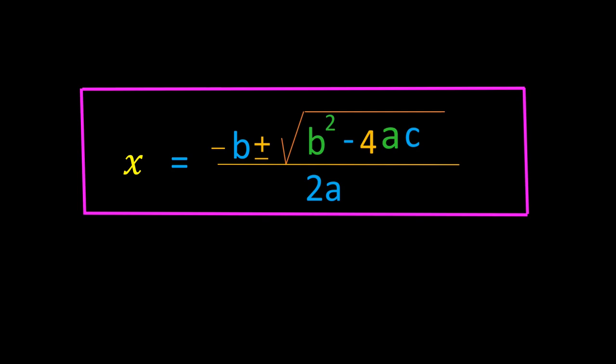If we know the coefficients of a quadratic equation and substitute them into this formula, on simplification we get the roots of the given quadratic equation. The two roots are: x equals minus b plus square root of b squared minus 4ac, all over 2a; and x equals minus b minus square root of b squared minus 4ac, all over 2a. Thank you.